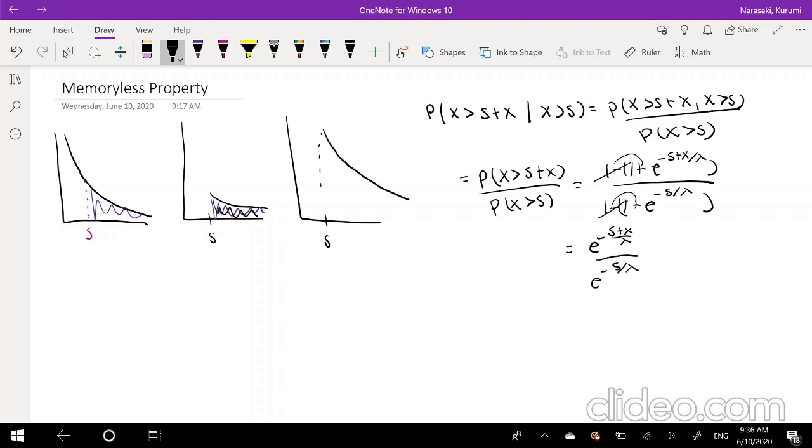And we can actually break this down into, take the numerator, break it down into e to the negative S over lambda times e to the negative X over lambda divided by e to the negative S over lambda. So these two cancel out and all you're left with is e to the negative X over lambda.